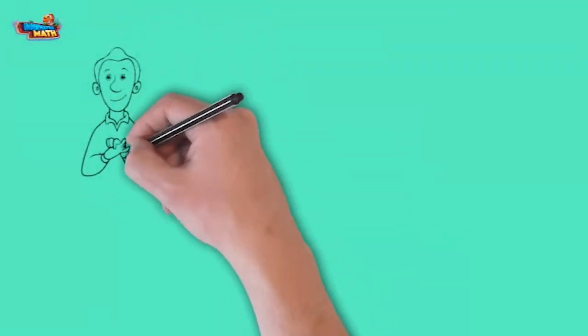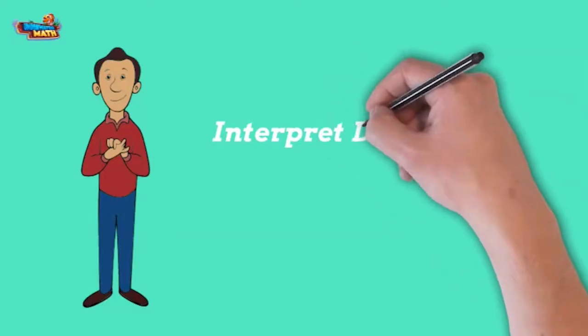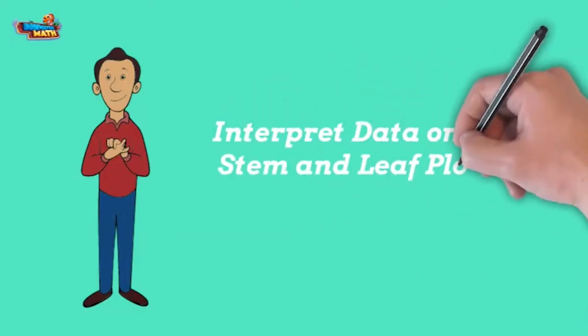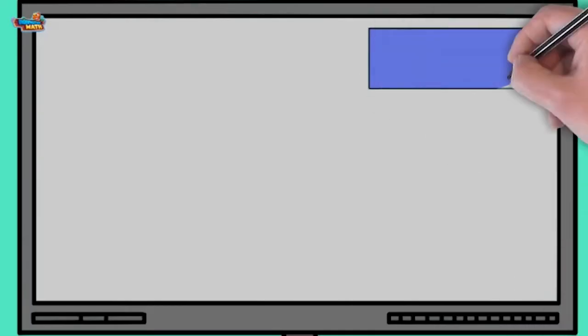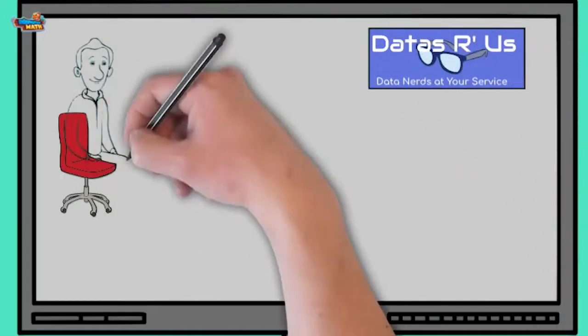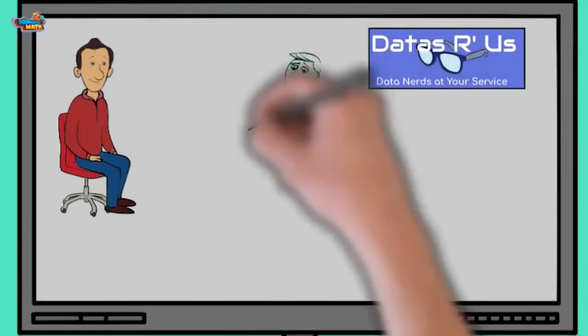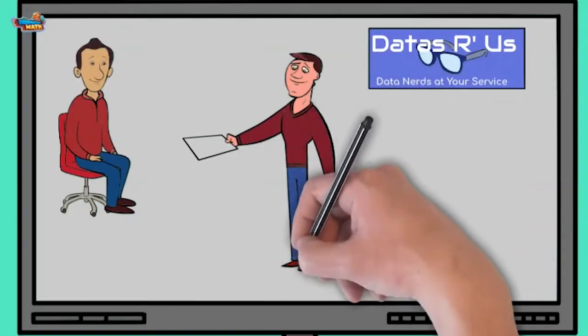We are back again to share another clip from Datas Are Us. Today I meet with a talented quarterback and discuss how to interpret data on a stem and leaf plot. Hey bro, I need your help. I had an outstanding season and our team statistician kept track of the total yards I threw the ball this season.